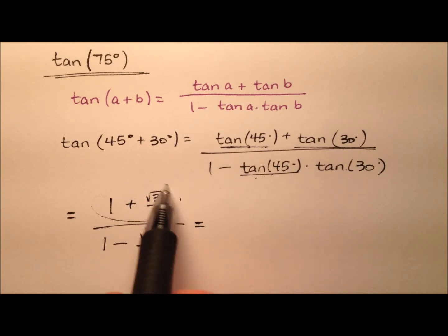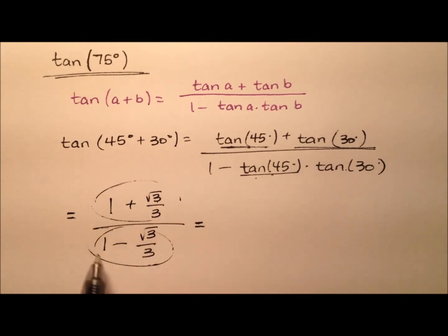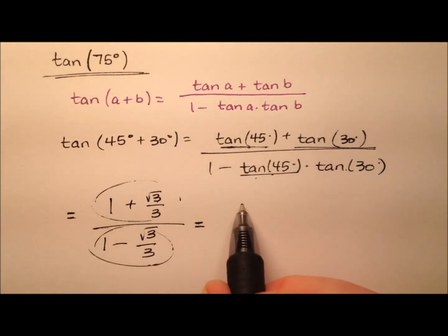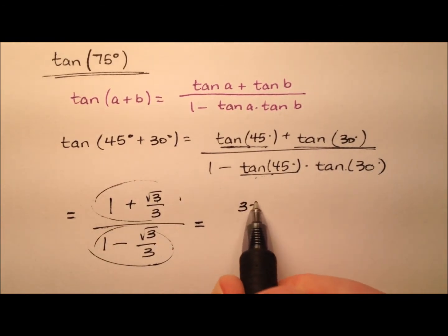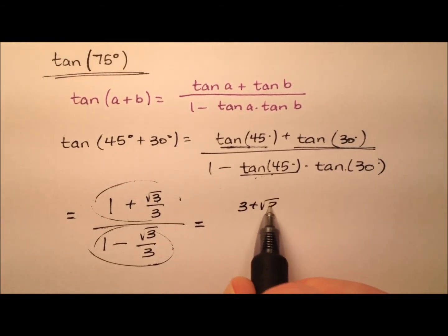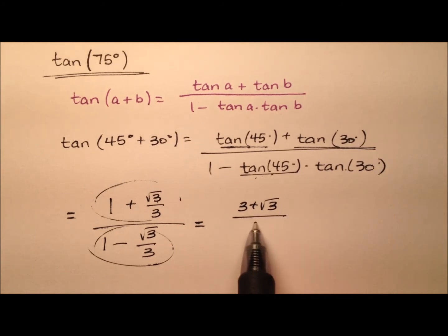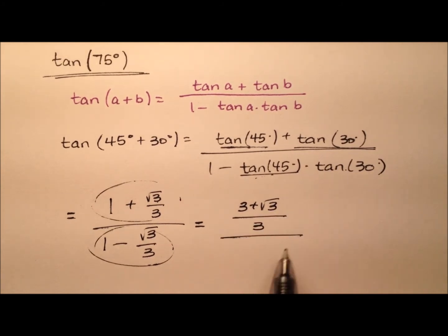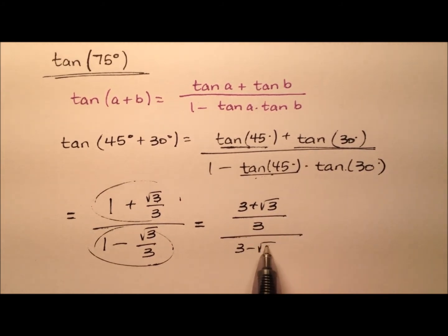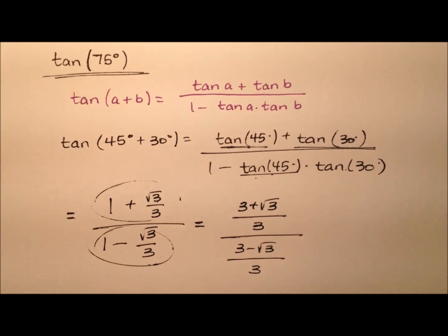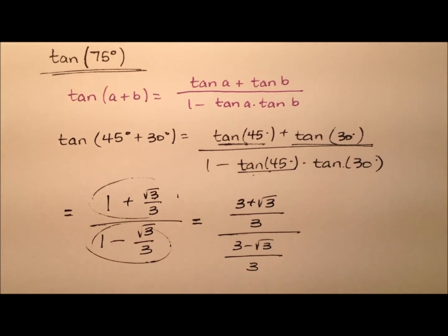So let's go ahead and get common denominators on top and bottom. It looks like I'll have 3 plus the square root of 3 over 3, and 3 minus the square root of 3 over 3.